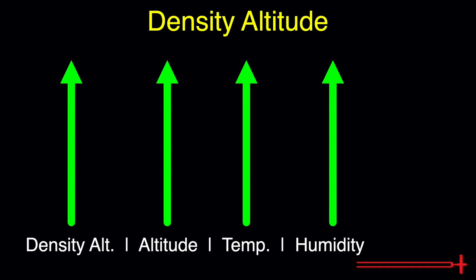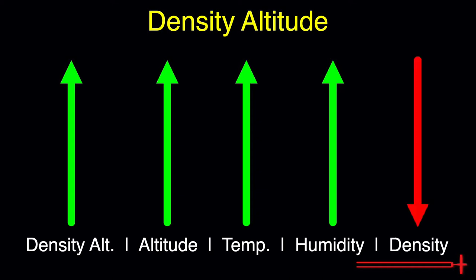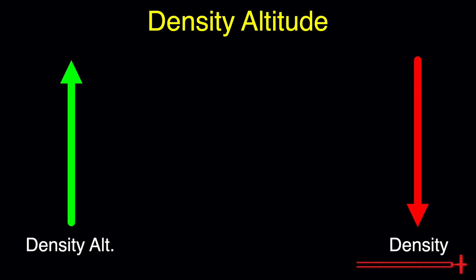Now this always goes against intuition at first, but as density altitude increases, the density of the air decreases. At a higher altitude, temperature, or humidity level, we expect to find less dense air. It is very important to remember that density moves inversely to these values. As density altitude increases, the density of the air decreases. The inverse is also true.